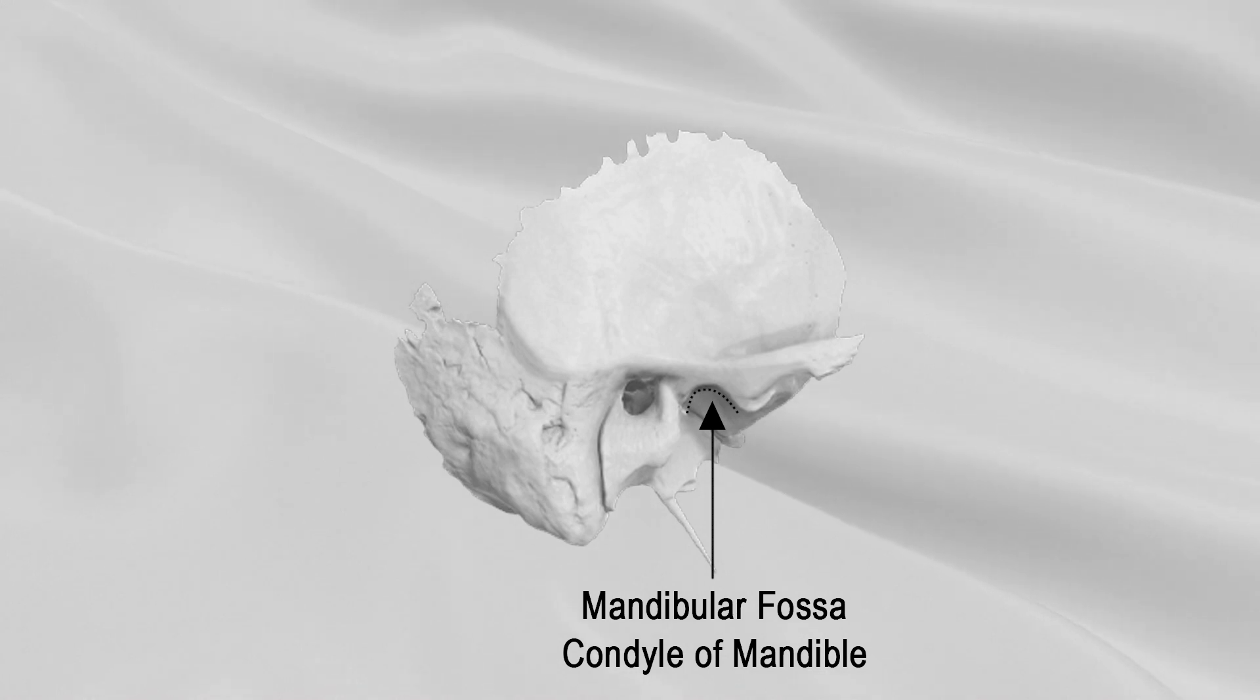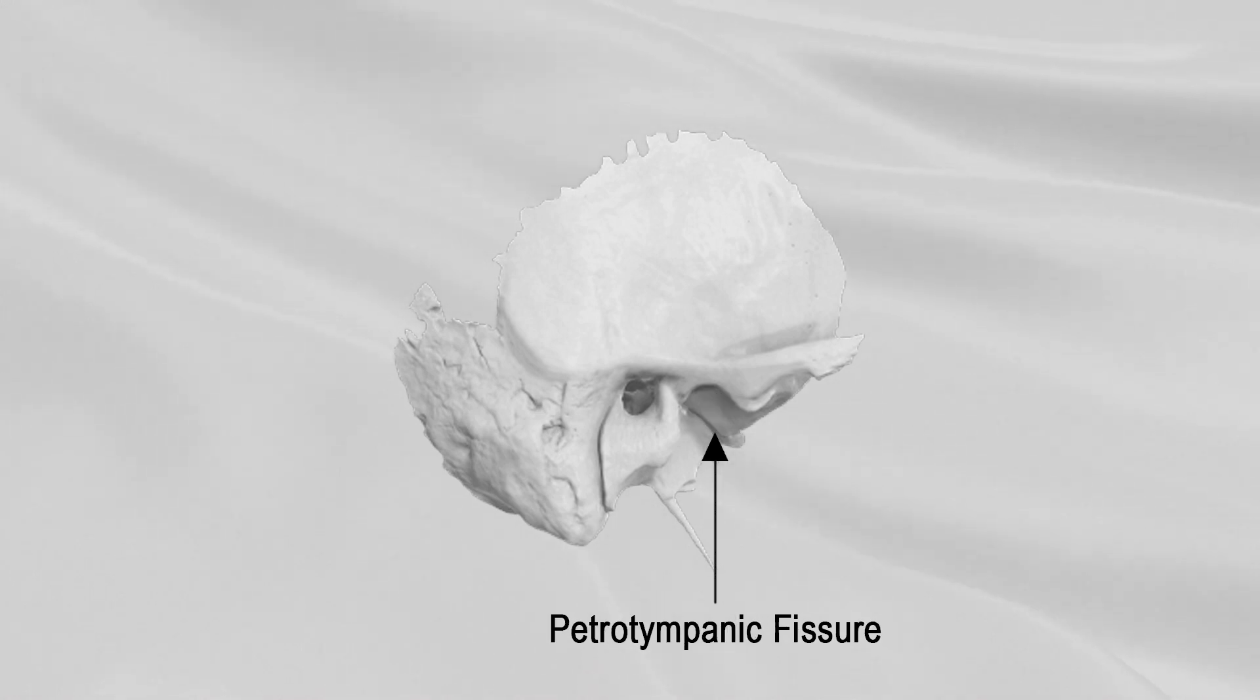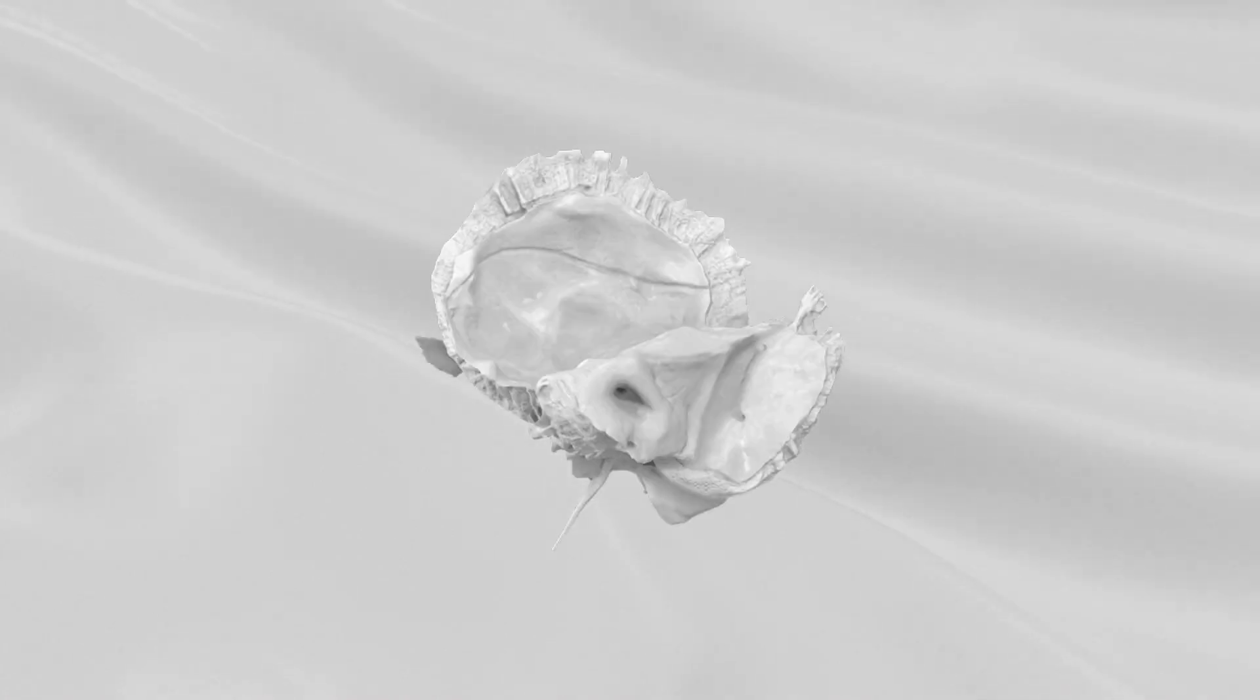This fossa is divided into two parts by the petro-tympanic fissure, which leads into the middle ear cavity. The internal surface of the squamous part is concave. It presents markings corresponding to the convolutions of the temporal lobe of the brain. It also shows grooves for the branches of the middle meningeal vessels.